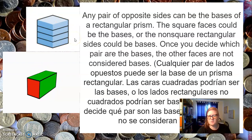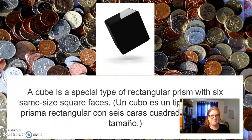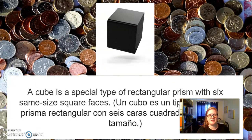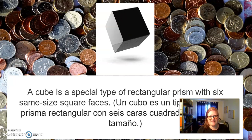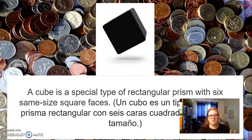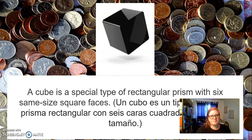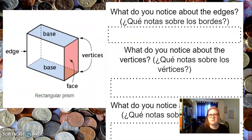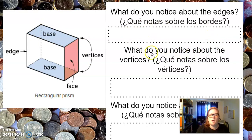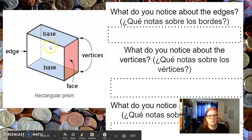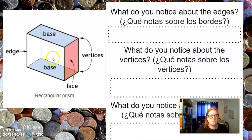I hope that makes sense. A cube is a special type of rectangular prism with six same-size square faces. A cube is extra special because all of the sides are the same size, no matter what. Now what do you notice about the edges? Here are the edges — here's one edge, here's another. What do you notice about the vertices? Remember, the vertices are the points at which two lines meet. What do you notice about the bases? It says that these two are the bases — what do you notice about them?